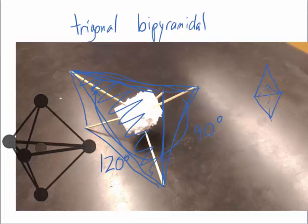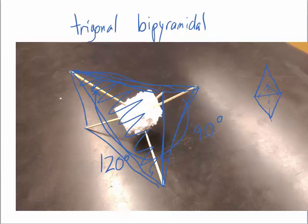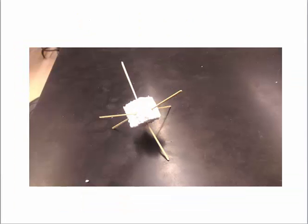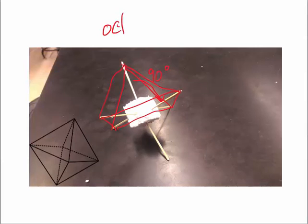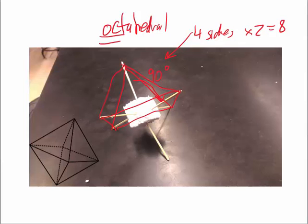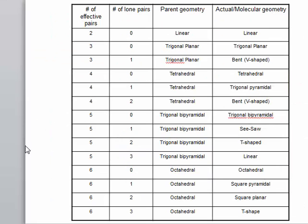And again, that'll be more obvious when we look at these models in class. When you have six bonds, the angle between every bond is 90 degrees. And this structure is called octahedral. And the reason it's called octahedral is because each pyramid has four sides. And you can see that when you have two pyramids facing, one facing up and one facing down, it'll have eight sides, hence octahedral.